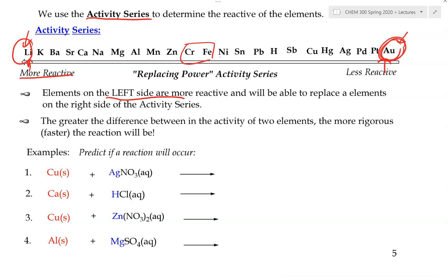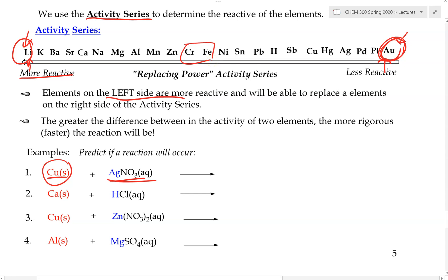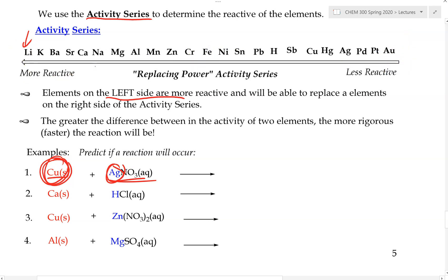Let's try a few examples using the activity series to predict whether there is a reaction. Example 1: solid copper reacting with a solution of silver nitrate. Copper is an element and silver nitrate is a compound. Will there be a reaction? There will only be a reaction if copper is more reactive than silver. Looking at the activity series, copper is to the left of silver, so copper is more reactive than silver. Therefore, yes, there will be a reaction.